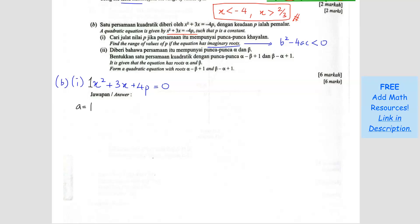We identify A equals 1, B equals 3, C equals 4p. So B squared minus 4AC: 3 squared minus 4 times 1 times 4p less than 0. This gives 9 minus 16p less than 0.